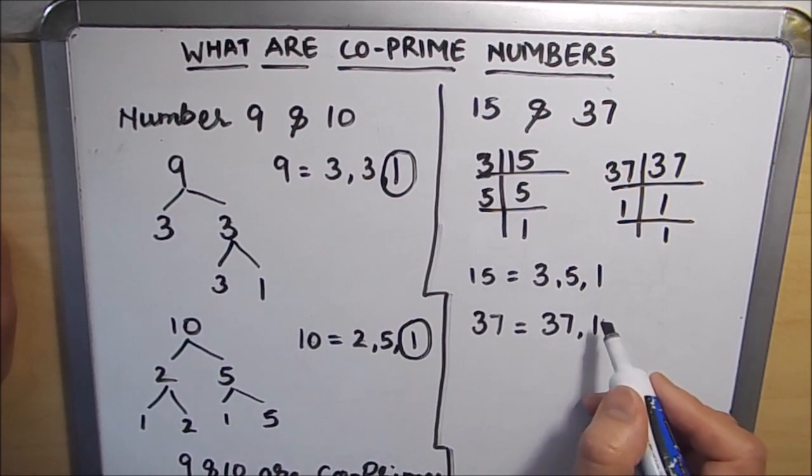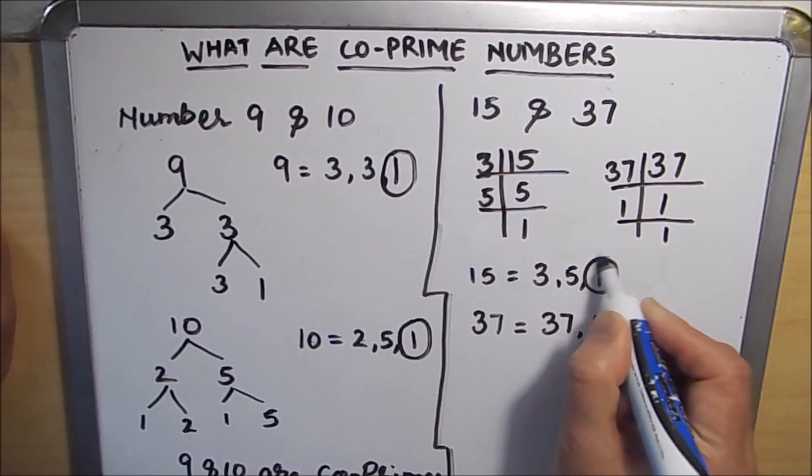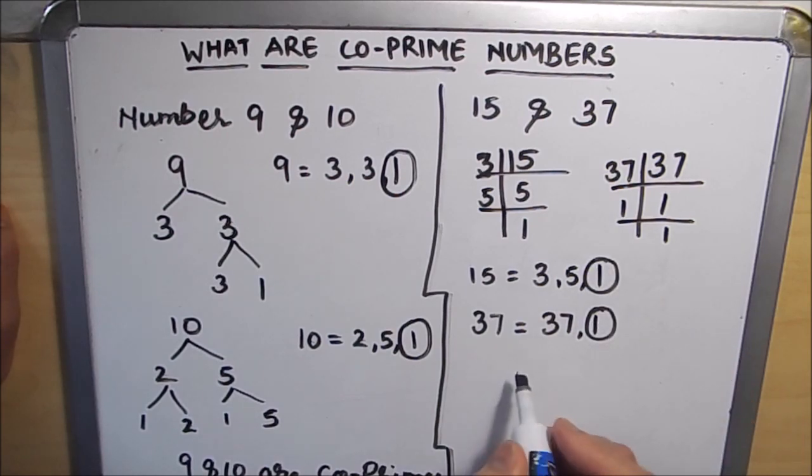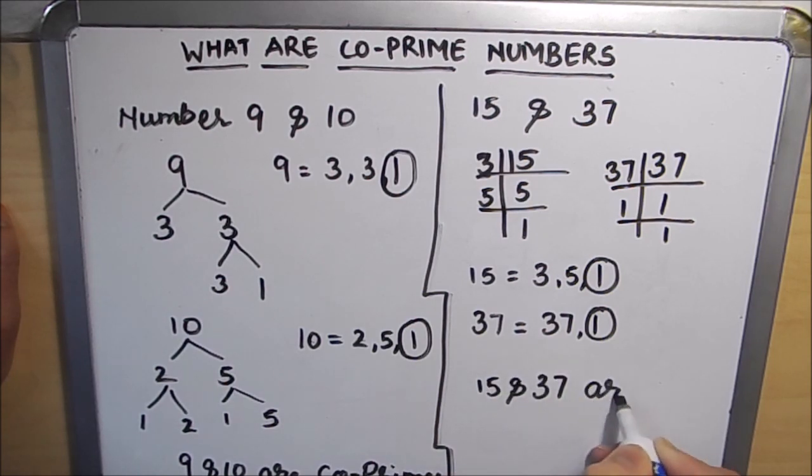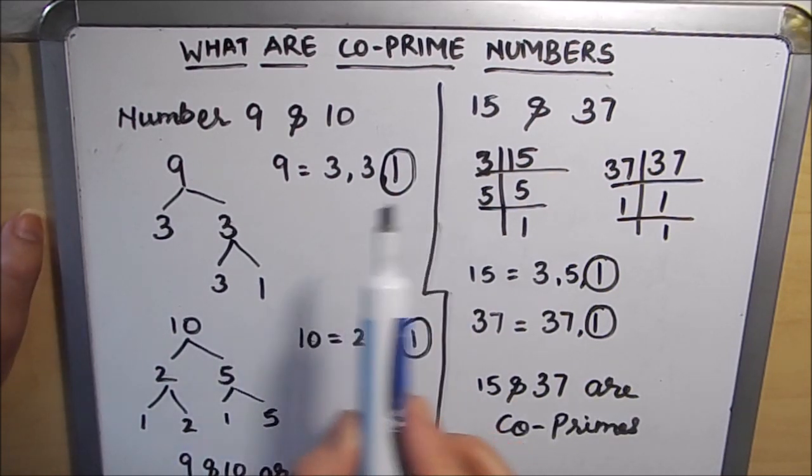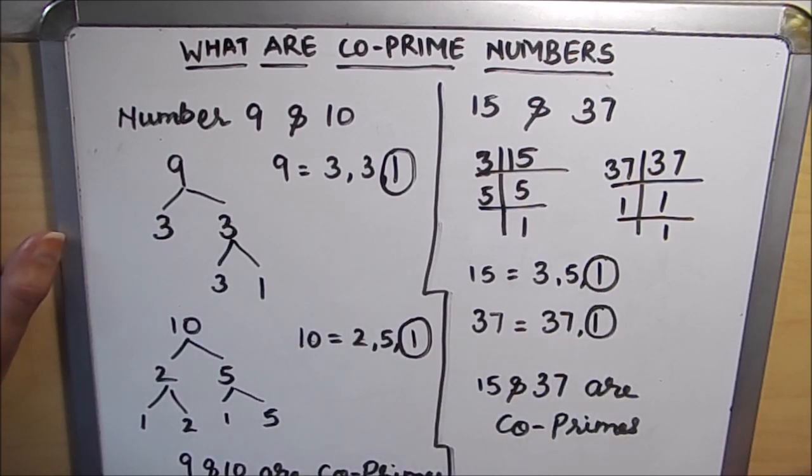And factors of 37 are 37 and 1. So here the common factor in between 15 and 37 is 1, or only 1 is the common factor between 15 and 37. So we can say that 15 and 37 are co-prime numbers. So numbers having only 1 as the common factor in between them are called co-prime numbers.